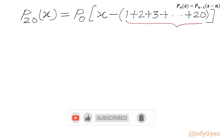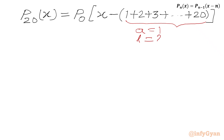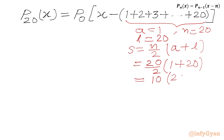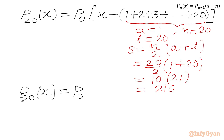For this sum, first term A = 1, last term L = 20, total number of terms = 20. Using the sum formula S = N/2 × (A + L), we get S = 20/2 × (1 + 20) = 10 × 21 = 210. So we can write P₂₀(x) = P₀(x - 210).